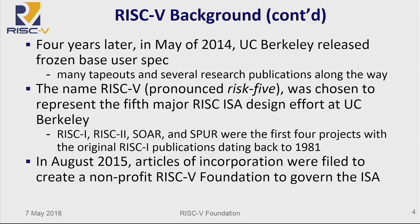And so the V, as you all know, is not a V — it's Roman numeral V, as in the fifth generation of RISC research out of the team at UC Berkeley, originally under Patterson's work back in the 80s, which was RISC-1. Soar and Spur were kind of posthumously named three and four, just so that we have a continuous RISC-1 through RISC-5.